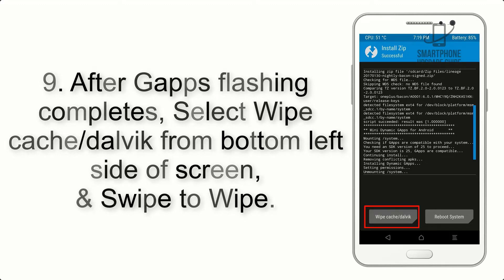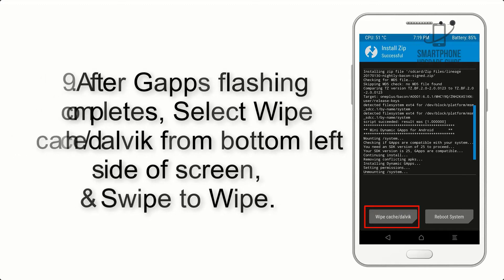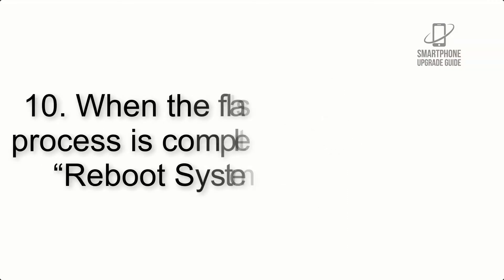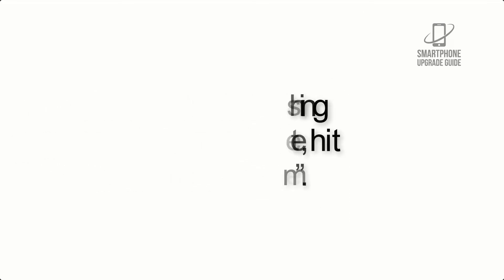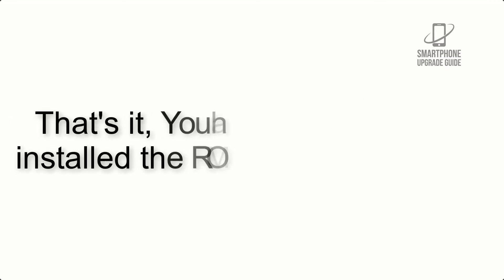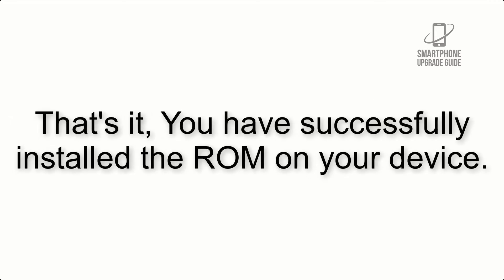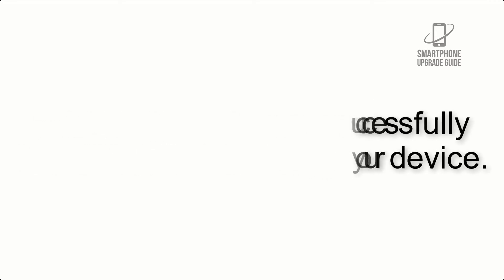Step 9: After GApps flashing completes, select Wipe Cache and Dalvik from the bottom left side of the screen and swipe to wipe. Step 10: When the flashing process is complete, hit Reboot System. That's it — you have successfully installed the ROM on your device.